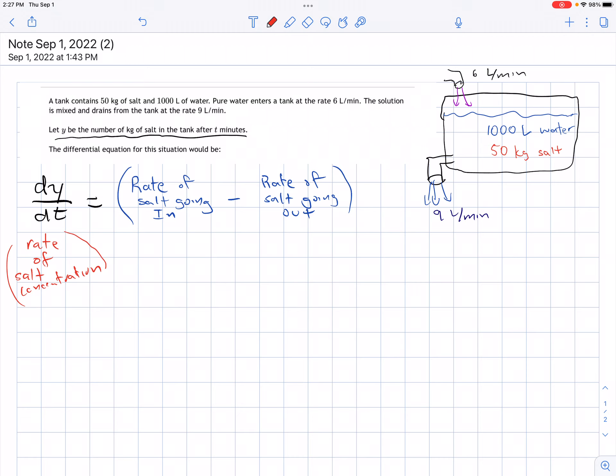To figure this out, we're going to look at the rate of salt going in, which we know is zero because 6 liters per minute of pure water is entering with no salt, minus the rate of salt going out.